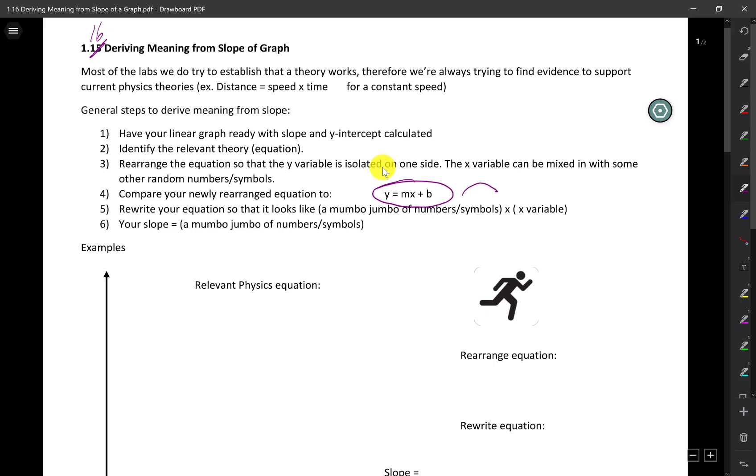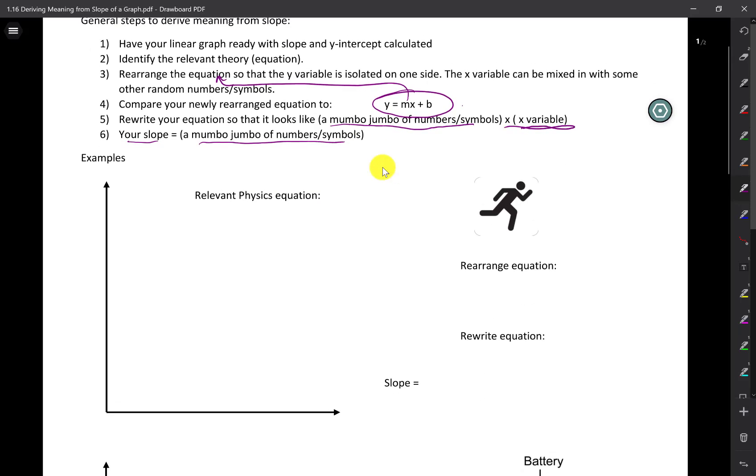Then you're going to compare the slope from your graph to some combination of constants inside your equation. So after rewriting your physics equation, it should look like some sort of numbers times the variable that's in your x-axis. Then you will find what your slope means. And from there, you can derive a constant inside your equation and compare it with known values. Of course, all this means nothing until we go over some examples.